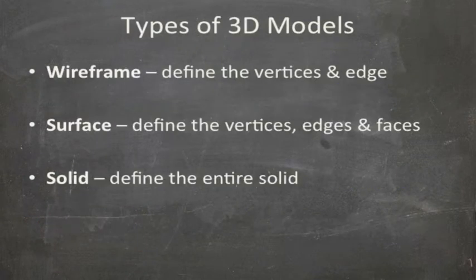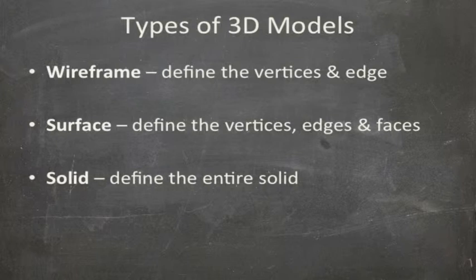To start off, there are three types of 3D models. First, there's the wireframe model, which basically defines the vertices and the edges. Next, there are the surface models, which define the vertices, edges, and the faces. Lastly, there's the solid model that defines the entire solid.